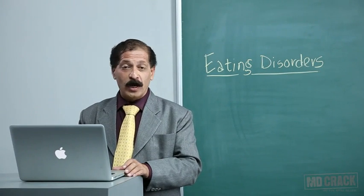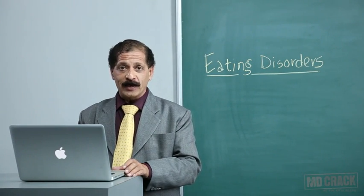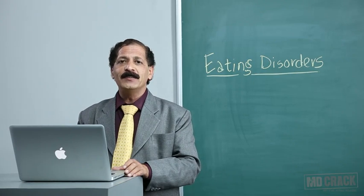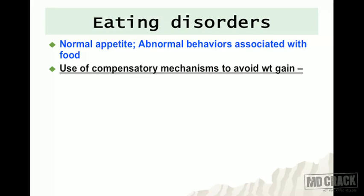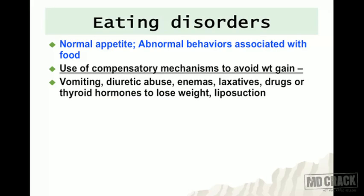Welcome back. In this psychiatry session we are going to cover eating disorders. In eating disorders, the appetite is normal but abnormal behaviors are associated with food — that's why we call them eating disorders. Obesity is not an eating disorder. In eating disorders, compensatory mechanisms are used to avoid weight gain, such as vomiting, diuretic abuse, enemas, laxatives, drugs, or thyroid hormones to lose weight.